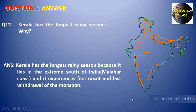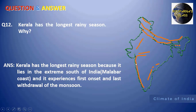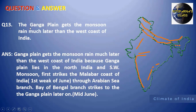Next: Kerala has the longest rainy season. Why? The southwest monsoon through the Arabian Sea branch first strikes the Malabar Coast, and Kerala is situated on the Malabar Coast. So the first onset of monsoon is on the Malabar Coast. Additionally, the withdrawal of the monsoon is also very late for the Malabar Coast, which is why Kerala has the longest rainy season.